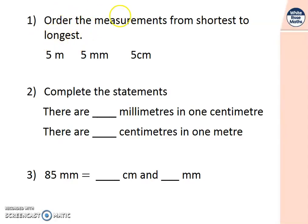Number 1: Order these measurements from the shortest to the longest. Have a go. Let's see how you did. It should be 5 millimetres is the shortest, then 5 centimetres and 5 metres is the longest. Number 2: Complete these statements. There are how many millimetres in 1 centimetre? That's right, 10. There are how many centimetres in 1 metre? That's right as well, 100. We really need to know these facts well, ready for today's learning.